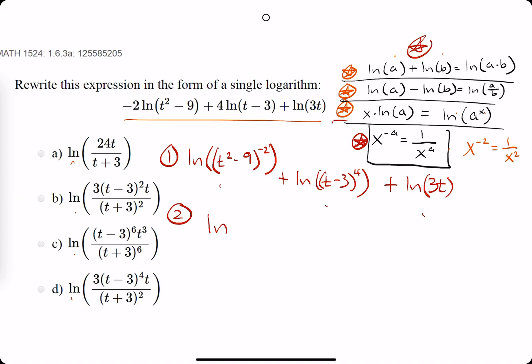So, we can do all three of these terms in one step by saying we have ln of t squared minus 9 to the negative 2 times the next inside piece, which is 3t minus 3 to the fourth times the next inside piece, which is 3t. Wow. Ok.